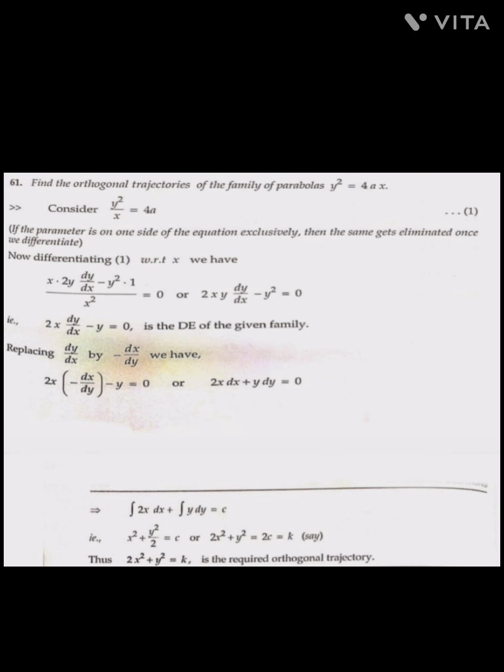Applying the quotient formula: x(2y dy/dx) - y²(1) all over x² = 0. Simplifying: 2x dy/dx - y = 0. This is the differential equation of the given family.